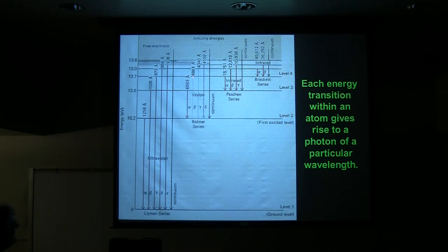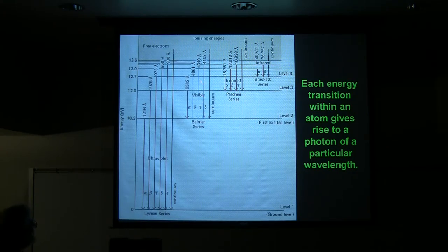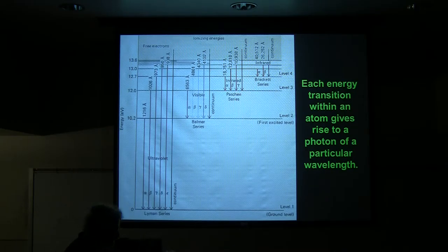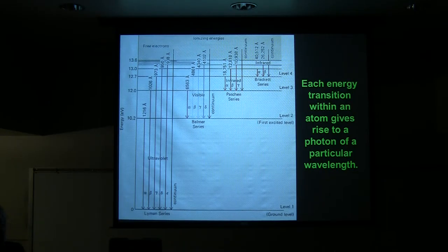The next transition, from the fifth to the second shell, is kind of blue-violet, then deep violet. If you were looking closely last month with the handheld diffraction gratings at the hydrogen lamp, you could see all those different lines at specific places. Because those energies are always the same when it goes from a given shell to another, it always gives you a particular wavelength at the same spot all the time.